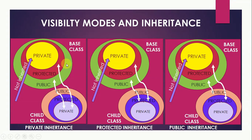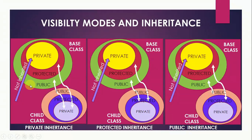Let us understand it diagrammatically. If this is the base class which has three sections — private, protected, and public — the private members are not inherited. In the case of private inheritance, the public members of the base class become the private members of the child class, and the protected members of the base class also become the private members of the child class. So all of them become private members of the child class.